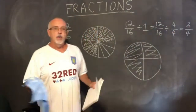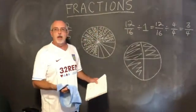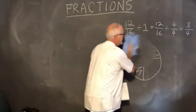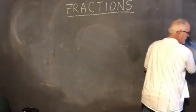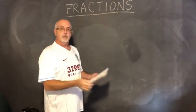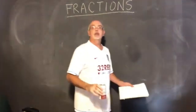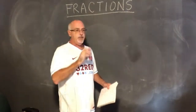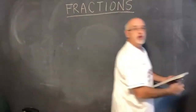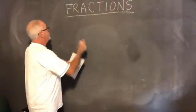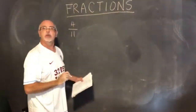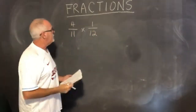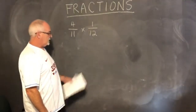Now I'm getting into some multiplying of fractions with canceling. Canceling while multiplying fractions might be the most fun thing in all of math. How about 4/11 times 1/12? This is a multiplying fractions problem, and I want to do it with canceling.